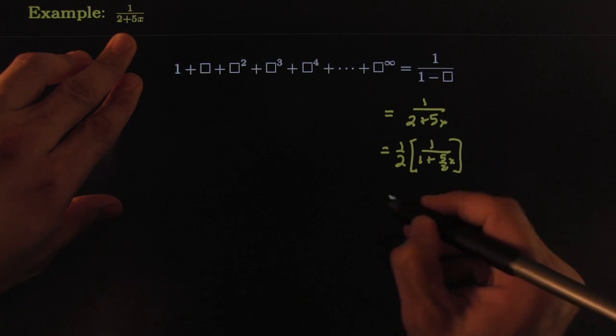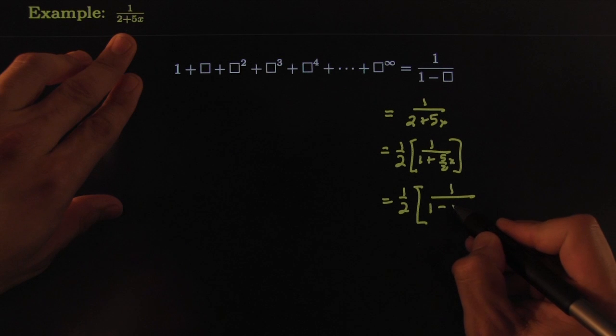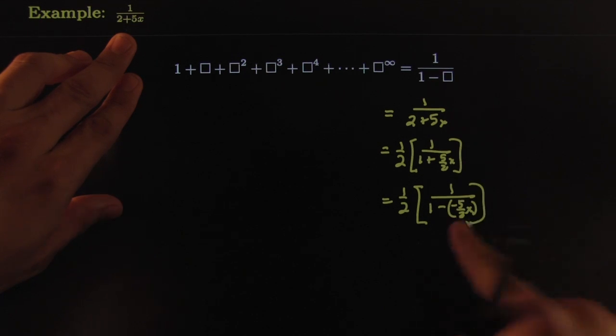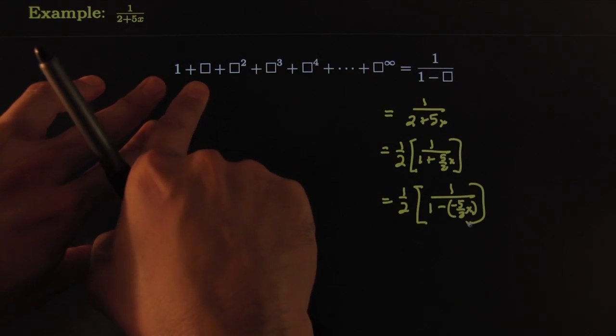That's a little better. At least it matches the one. I could do 1 half times 1 over 1 minus negative 5 halves X. Now it matches exactly the form I need, so I can write the series here and use the geometric series property.